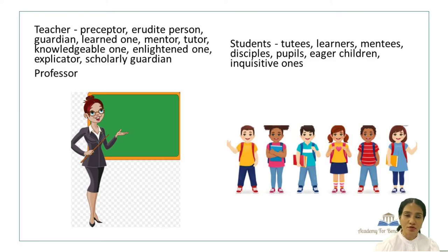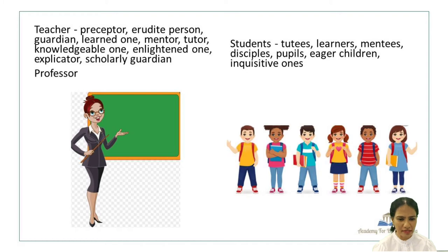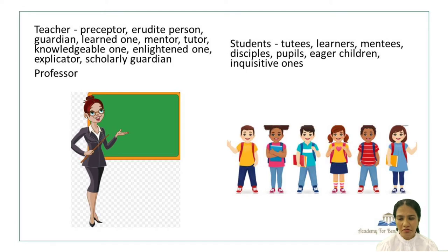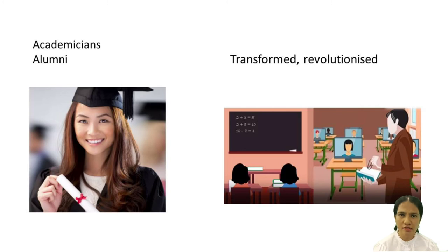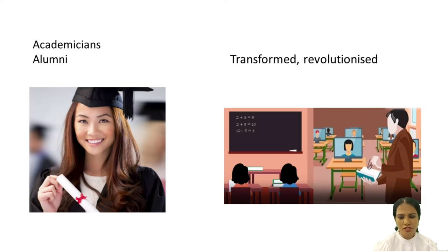Alternative words for a teacher would be: preceptor, erudite person (erudite meaning knowledgeable), guardian, learned one, mentor, tutor, knowledgeable one, enlightened one, explicator (one who explains), scholarly guardian, or professor depending on the context. Other words for students would be: tutees, learners, mentees, disciples, pupils, egos, children, and inquisitive ones. You may also use 'academicians' — honorific titles given to full-time members of an academy — and 'alumni' — past students of an educational institute. Instead of 'completely change' you may use 'transformed' or 'privileged.'